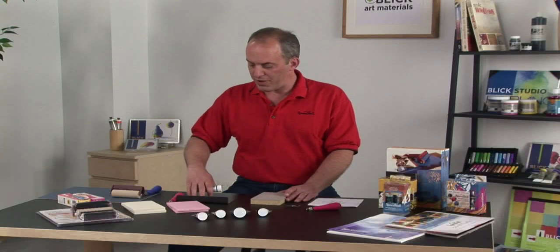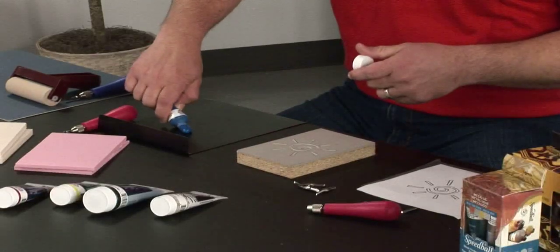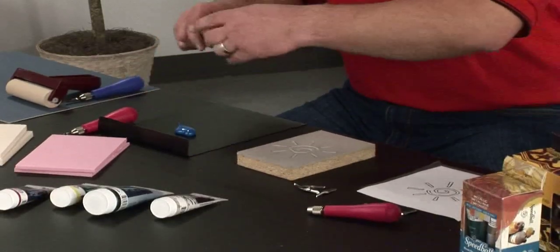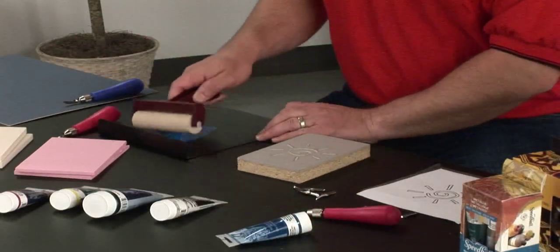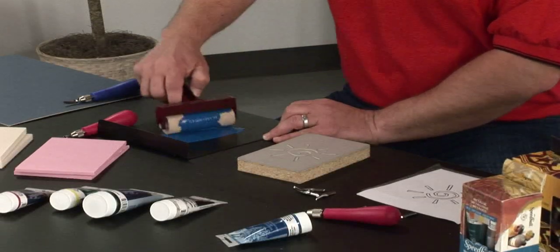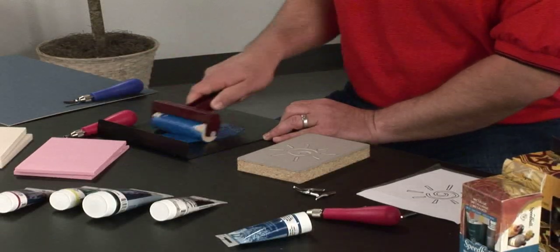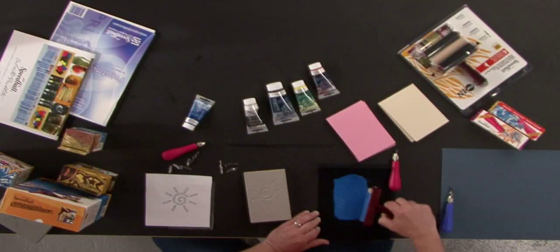You can use your bench hook as an inking plate. Applying a liberal amount of ink onto the plate, and using a hard rubber roller, you want to spread that ink around. You want to coat your brayer with ink in a nice even coating, and you'll use the brayer to transfer that ink onto the linoleum block.